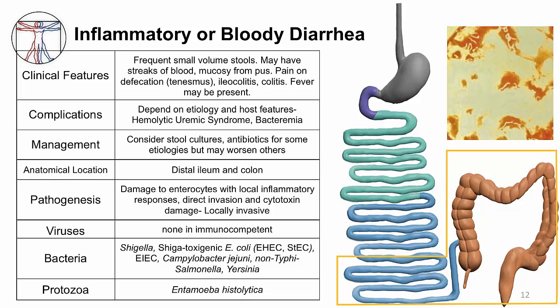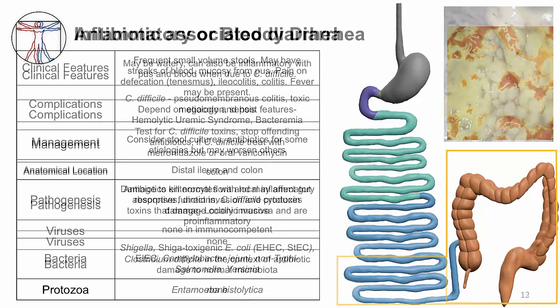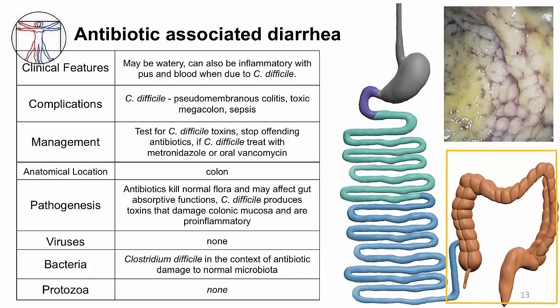The next clinical syndrome is antibiotic-associated diarrhea, which will be covered in lots of detail in a separate module. It is an iatrogenic illness caused by doctors prescribing antibiotics that injure or alter the normal bacterial microbiota of the colon, allowing pathogens to overgrow — in particular a bacteria called Clostridium difficile. The picture shows a severe form of colitis called pseudomembranous colitis caused by C. difficile. It starts with shallow ulcers produced by bacterial toxins that kill the epithelial cells, then fibrin, mucus, and inflammatory cells cause raised yellowish plaques that cover the colorectal mucosa.